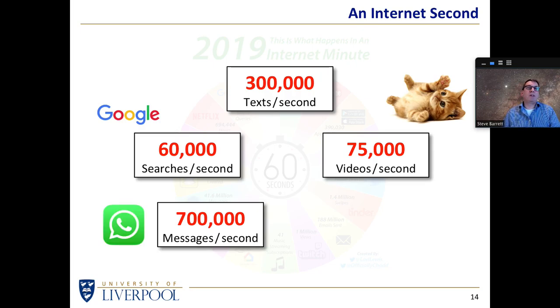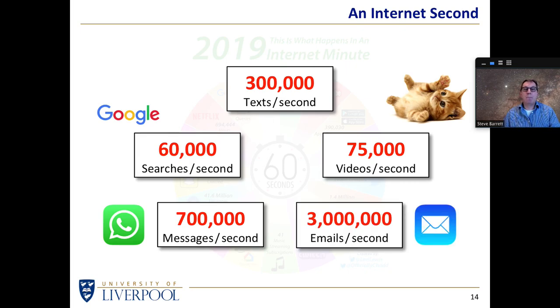700,000 messages via WhatsApp or other apps were sent backwards and forwards across the internet each and every second of 2019. And an absolutely staggering 3 million emails were sent. Okay, a few of those would have been spam, but still 3 million emails each and every second just reminds us how much traffic is flowing backwards and forwards across the internet.